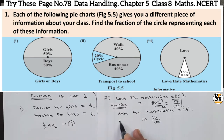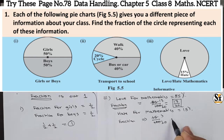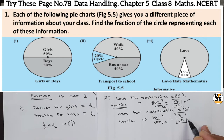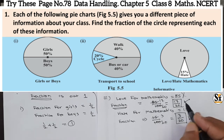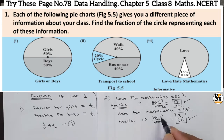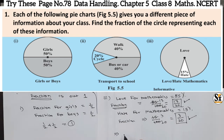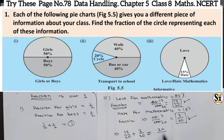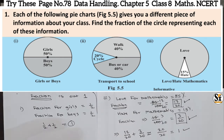The fraction for hate is 15 divided by 100, which simplifies to 3/20. So 17/20 is the fraction for love of mathematics and 3/20 is the fraction for hate of mathematics, meaning maximum students love mathematics. If we add 17/20 plus 3/20, we get 20/20, which equals 1. The condition is satisfied.